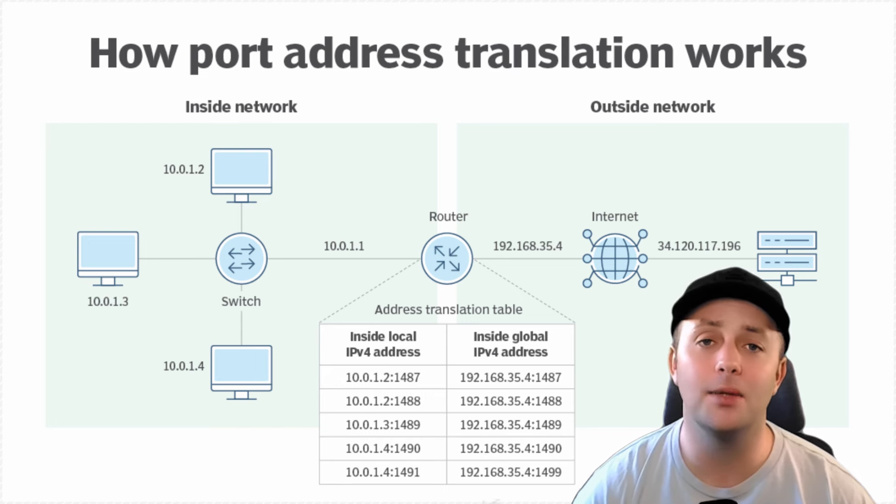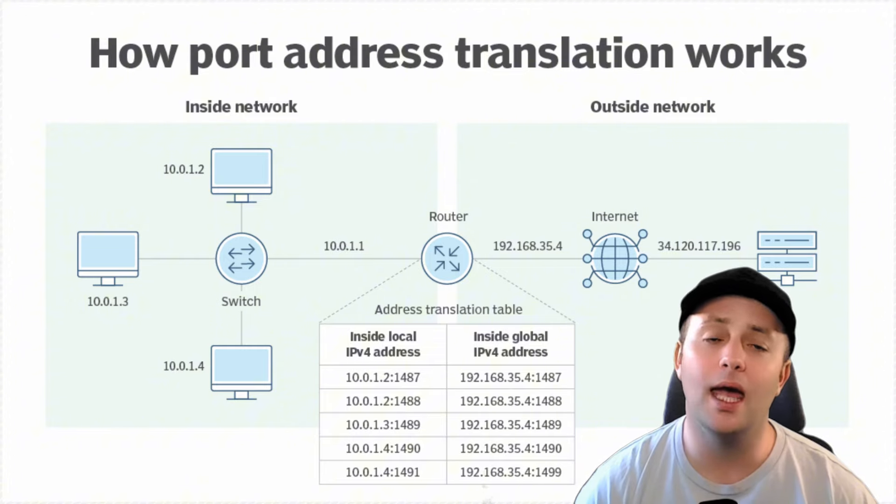PAT is by far the most common type of NAT and is used in most home and office networks. Why is NAT so important? One of the main reasons is that it helps conserve the limited number of public IPv4 addresses. The IPv4 address space is running out, and NAT allows us to extend the life of IPv4 by enabling multiple devices to share a single public IP address. NAT also adds an extra layer of security, since devices on your local network are using private IP addresses and are not directly accessible from the internet.